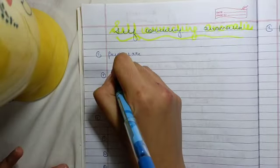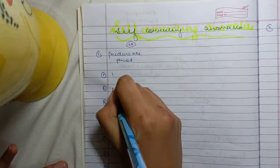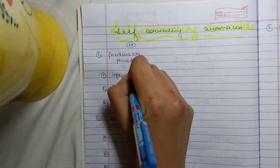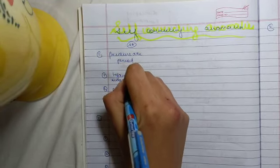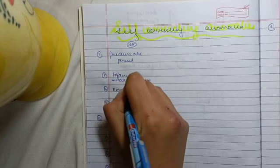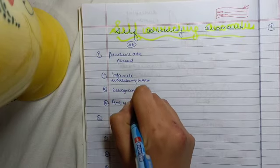For this, you must remember IRA. I stands for infantile swallowing pattern, R stands for retrogonathic mandible, A stands for anterior open bite.